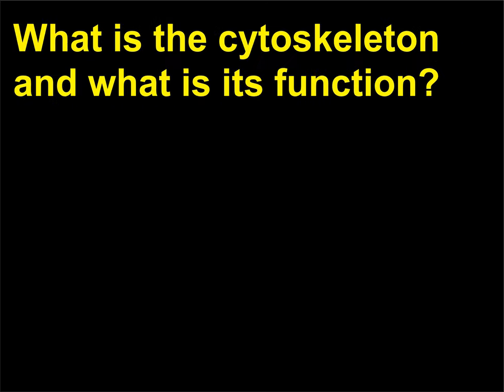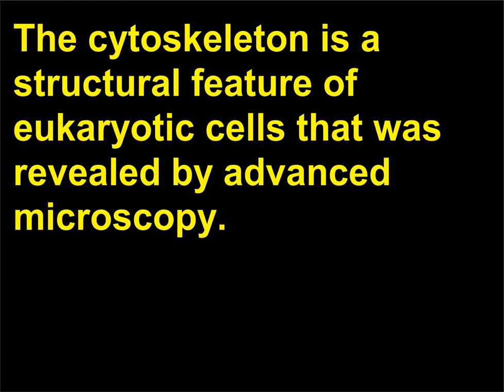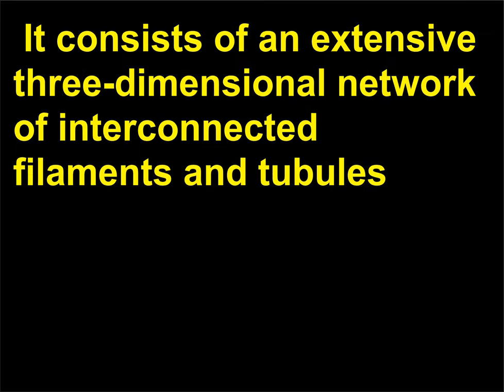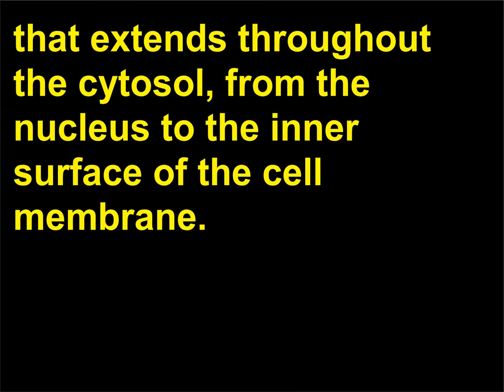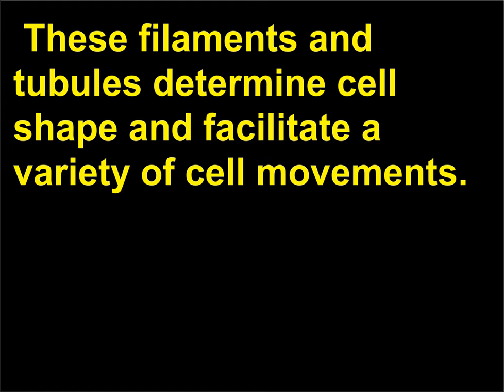What is the cytoskeleton and what is its function? The cytoskeleton is a structural feature of eukaryotic cells that was revealed by advanced microscopy. It consists of an extensive three-dimensional network of interconnected filaments and tubules that extends throughout the cytosol, from the nucleus to the inner surface of the cell membrane. These filaments and tubules determine cell shape and facilitate a variety of cell movements.